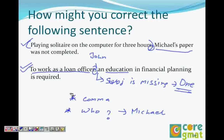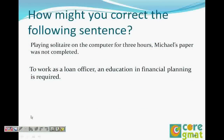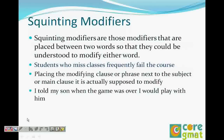So we've understood misplaced modifier and dangling modifier. Misplaced modifier is absolutely understood and so is the dangling modifier. After that comes the squinting modifier. Squinting modifier is also called a two-way looking modifier.